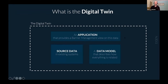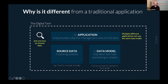We're defining the digital twin as a combination of three things: the source data that gives us information about current status, a data model that describes how all that information is related together, and an application that gives us the barrier management view on this data. The main difference from a traditional application is that the application is a lens on a common set of data. The data model could be built just for the safety barrier case, or it could be much wider, covering equipment state, condition monitoring, and all sorts of other functions.